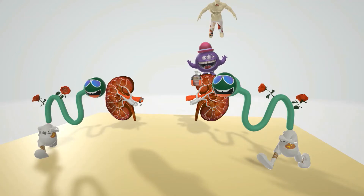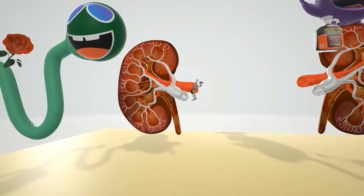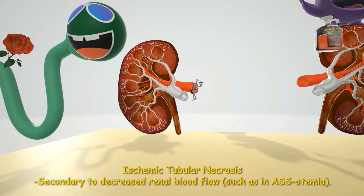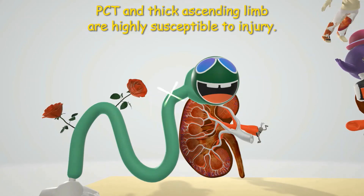Ischemic acute tubular necrosis is secondary to renal blood flow blockage or decrease, represented by a donkey stuck in the renal artery. This can be due to stenosis, an embolus, or simply hypovolemia — less blood flow to the kidney — so this pre-renal azotemia results in ischemic acute tubular necrosis, making it an intrarenal problem. The proximal convoluted tubule and the thick ascending limb are highly susceptible to ischemic injury.